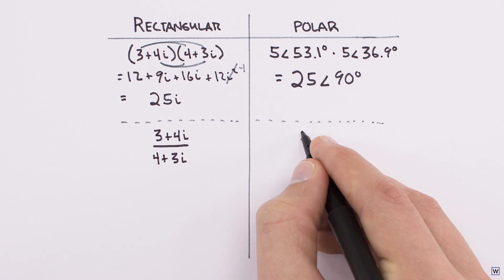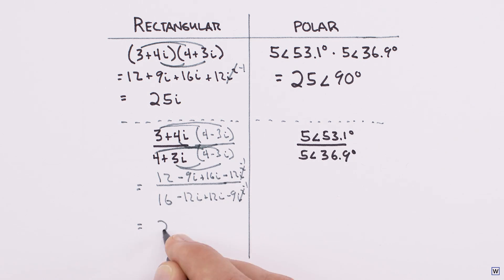Division is pretty simple too, especially compared to dividing in rectangular form. To divide in polar form, we divide the magnitudes and subtract our angles.